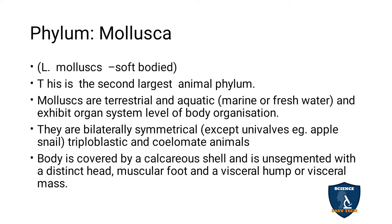Molluscans are coelomate animals — a true body cavity is present. The body is covered by a calcareous shell and is unsegmented, with a distinct head, muscular foot, and a visceral hump or visceral mass. There is no segmentation as seen in arthropods and annelids. They have a distinct head, muscular foot, and the visceral hump.